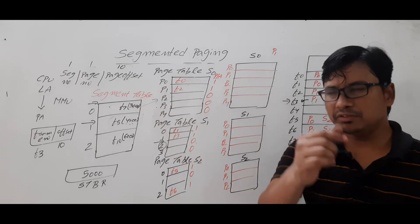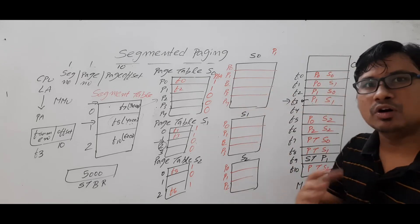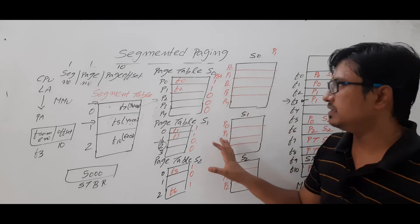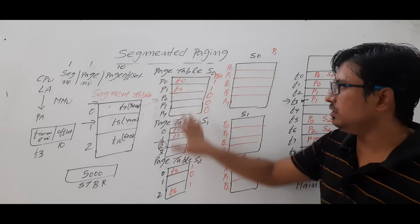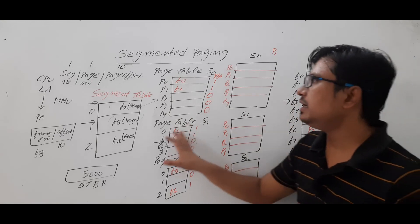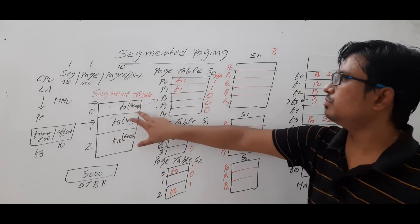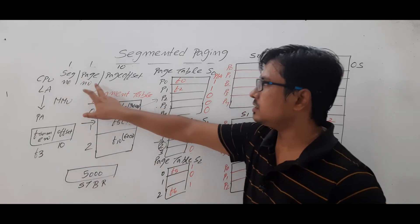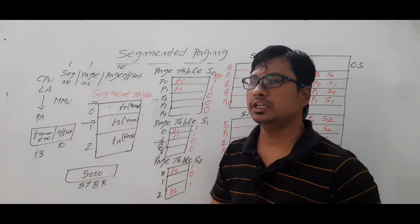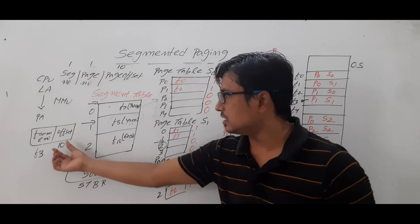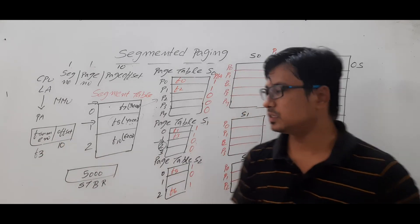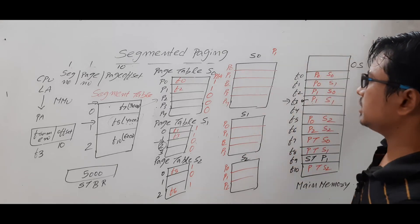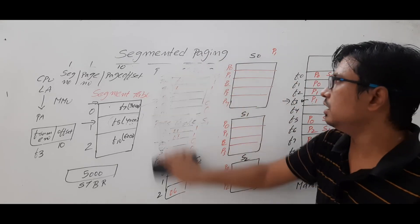In summary: in segmented paging, main memory is divided into frames; the process is divided into segments; each segment is divided into pages; each segment has its own page table stored in a frame; a segment table holds the base address of each page table; the CPU generates a logical address with segment number, page number, and page offset; the MMU converts it to a physical address of frame number and frame offset; and one register holds the base address of the segment table.